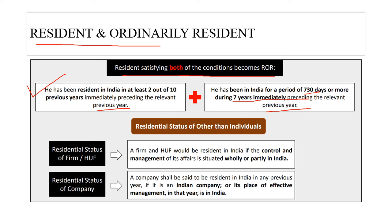For residential status of entities other than individuals: a firm and Hindu Undivided Family will be resident in India if the control and management of its affairs is situated wholly or partly in India. For a company, it shall be said to be a resident in India in any previous year if it is an Indian company, or if its place of effective management in that year is in India. I hope you understand all these concepts and definitions.